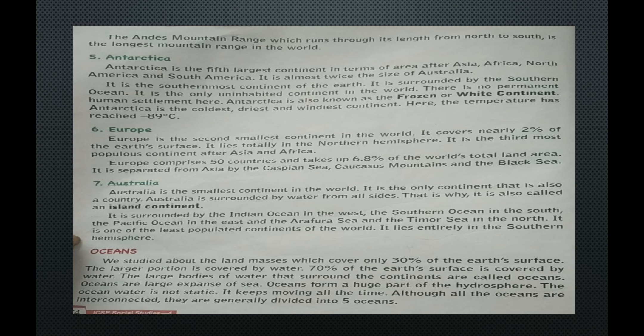Australia is the smallest continent in the world and the only continent that is also a country. It is surrounded by water from all sides, which is why it is also called an island continent. It is bounded by the Indian Ocean in the west, the Southern Ocean in the south, the Pacific Ocean in the east, and the Arafura Sea and Timor Sea in the north. It is one of the least populated continents and lies entirely in the southern hemisphere.